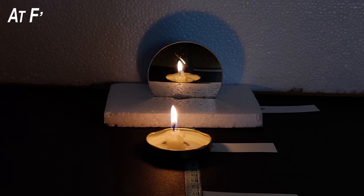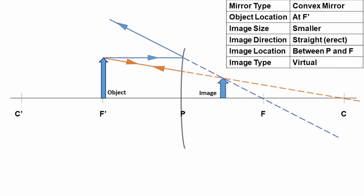Similarly, when the candle is kept at point F', an image of the candle is visible in the mirror. Again, the blue and orange lines after getting reflected travel away from each other and did not meet, so no real image was formed. However, a virtual image was formed in the mirror which was smaller than the actual size of the object, erect, and virtual in nature.